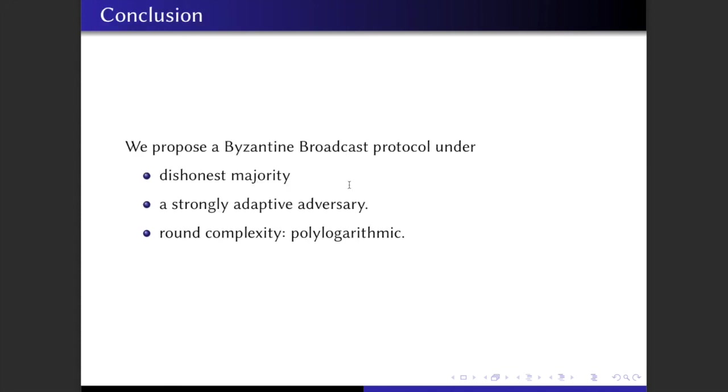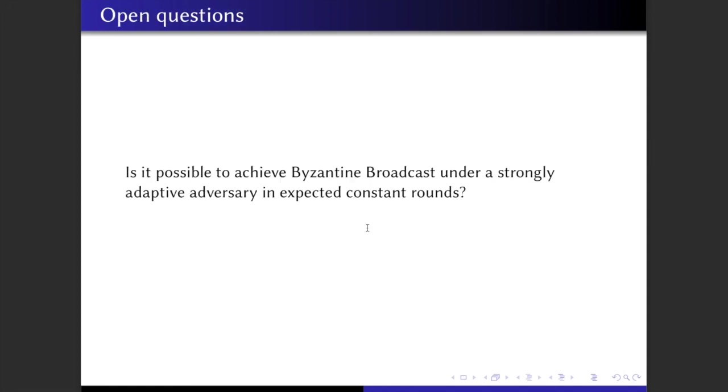So in conclusion, we propose a Byzantine Broadcast protocol that works under dishonest majority and a strongly rushing adaptive adversary. The round complexity is polylogarithmic. However, it remains an open problem whether it is possible to achieve Byzantine Broadcast under a strongly adaptive adversary in expected constant number of rounds, of course under dishonest majority.